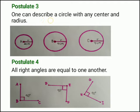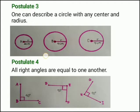Postulate three: one can describe a circle with any center and radius. For example, a circle with center A with radius of 2 cm, another example, circle with center B with radius of 4 cm, and circle with center C with radius of 7 cm.